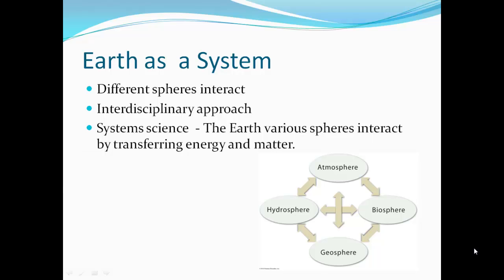We look at Earth as a system, where it has different parts that interact — kind of like a car has an engine, a cooling system, and a fuel pump system that all work together to make a moving car. In the case of the Earth, the hydrosphere needs to interact with the geosphere and the biosphere, and all the spheres interact with all the others. This necessitates an interdisciplinary approach to studying the Earth, called system science. Earth's spheres interact by transferring energy and matter.